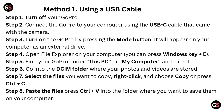Step four: open File Explorer on your computer — you can press Windows key plus E. Step five: find your GoPro under This PC or My Computer and click it. Step six: go into the DCIM folder where your photos and videos are stored. Step seven: select the files you want to copy, right-click and choose Copy, or press Ctrl+C.